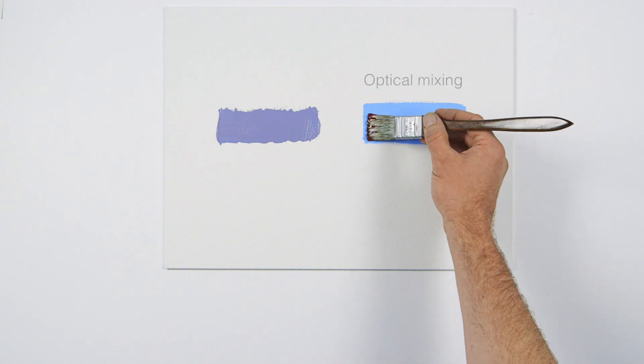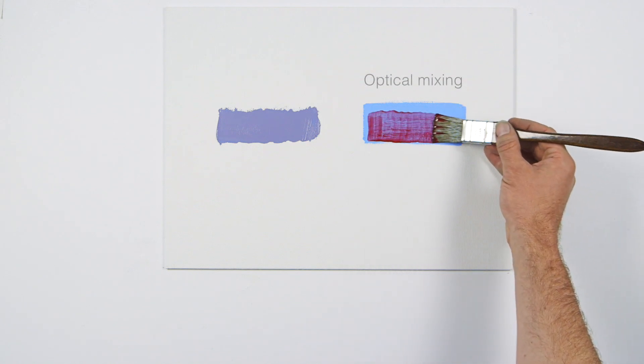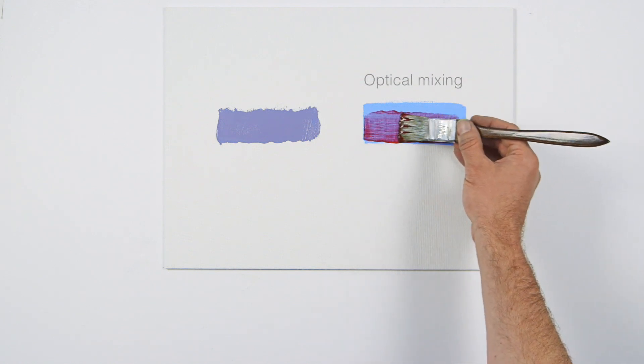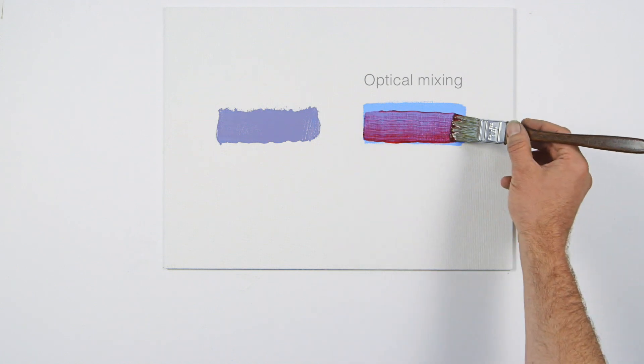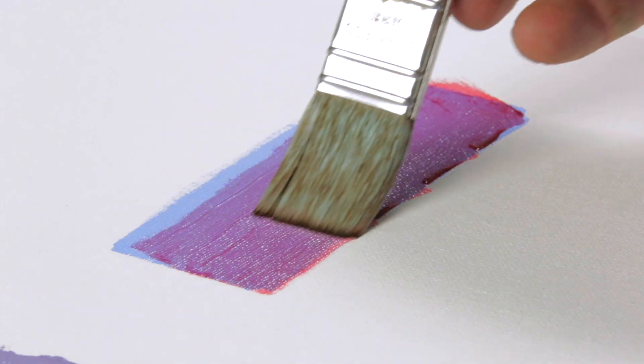I'm layering alizarin crimson over pale blue to create an optically mixed violet. Further layering can make the mixtures more complex and interesting.